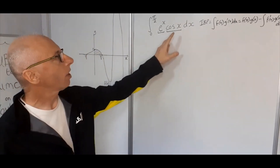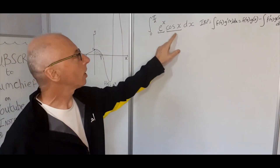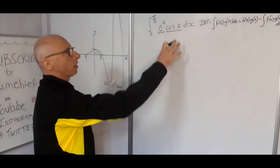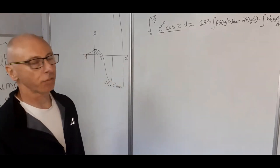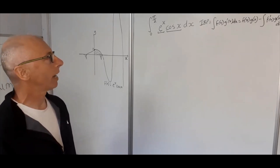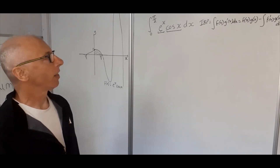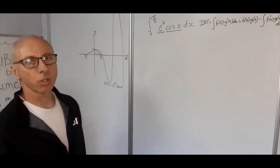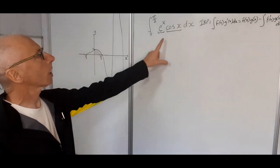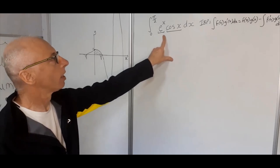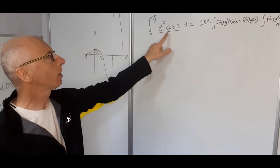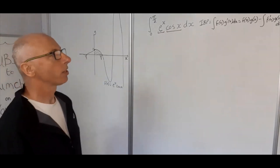What we need to do is assign one of these two functions as either f or g. Now e to the x and cosine of x — if you keep differentiating them, they're never going to disappear to zero, whereas for example x squared after the second derivative disappears to zero: x squared becomes 2x, then 2, then 0. As these two don't disappear, we could go either way in choosing f and g, so why don't we have a go at both?